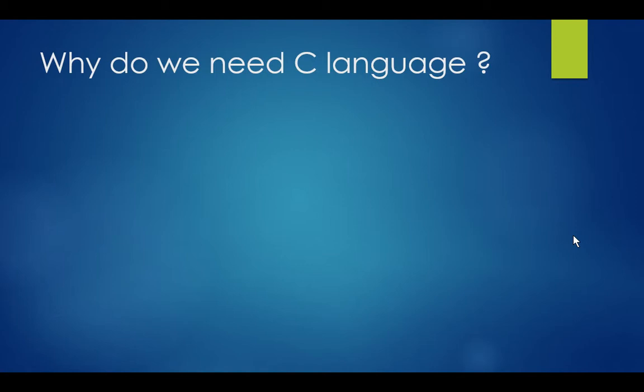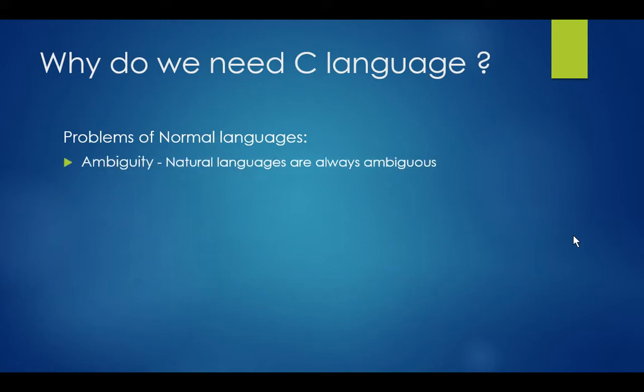Why do we need a programming language? We need C language because we can't use normal languages. The basic problem with a normal language is ambiguity. Natural languages are always ambiguous; each person can derive his or her own meaning from a given statement.